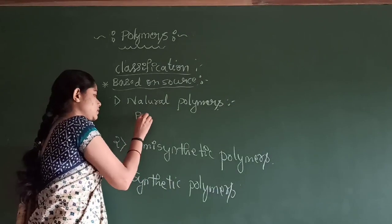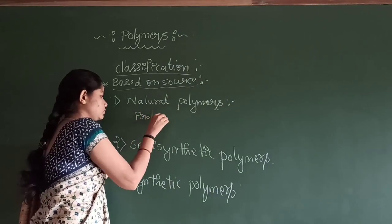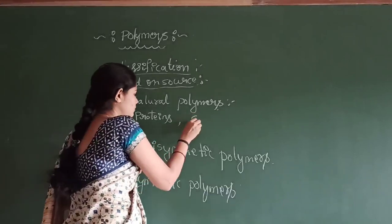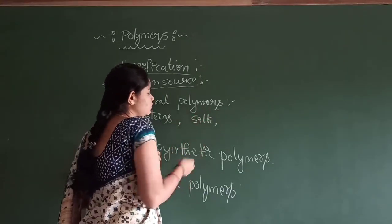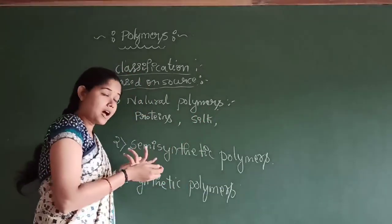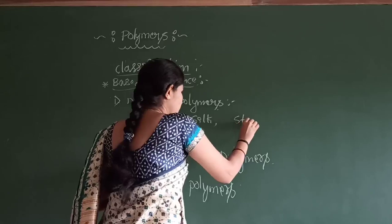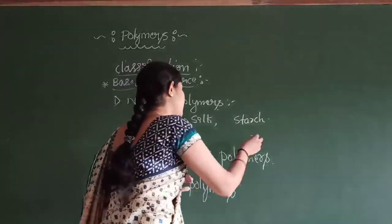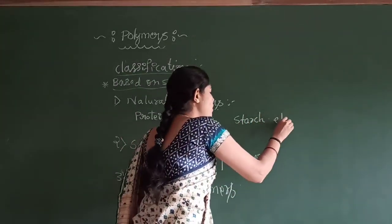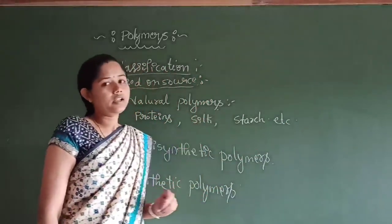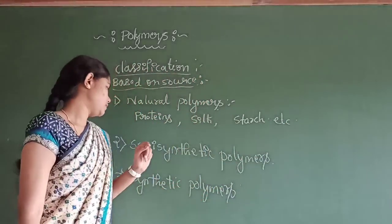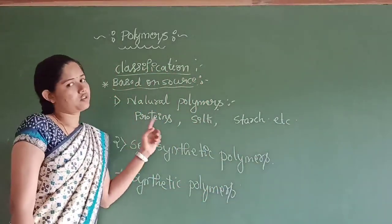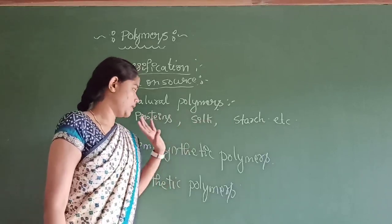Examples of natural polymers are proteins, silk, starch, fats, etc. All of these are known as natural polymers — polymers found in plants and animals.